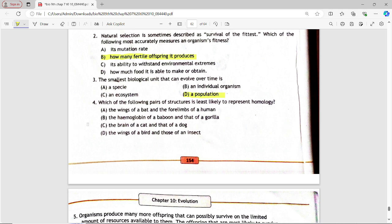Next MCQ is, which of the following pair of structures is least likely to represent homology? Option A, the wings of a bat and the forelimbs of a human. Option B, the hemoglobin of a baboon and that of a gorilla. Option C, the brain of a cat and that of a dog. Option D, the wings of a bird and those of an insect. Answer is option D, the wings of a bird and those of an insect.